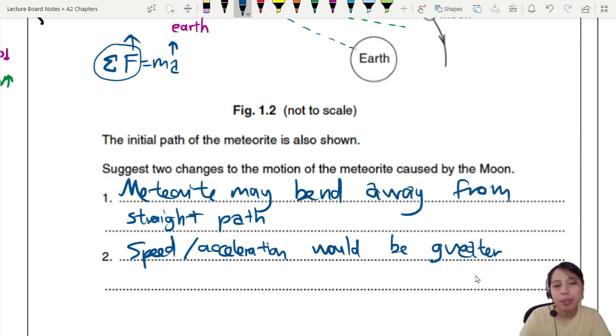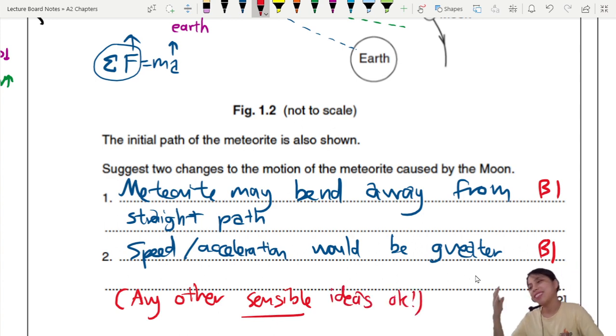Okay. You can, I mean, you can say because larger resultant force, but we don't need to explain that. So it's fine. Okay. So this one, if you've got two marks here, this is B1 and B1. The mark scheme is very generous. They accept if you have any other sensible ideas. What does sensible mean? It's really up to the examiner to decide, you know, so risky. So write something that makes sense and you should be okay.